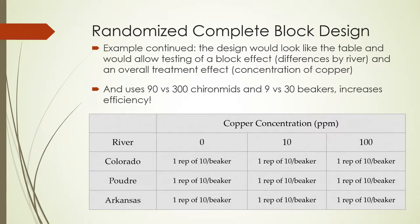If there is a lot of variation associated with different rivers, you can often get by with many fewer replicates when you block on river. You only need one replicate of each river-copper concentration combination — nine different beakers versus thirty in the previous example — because you're factoring out the high source of variation from river-to-river differences.